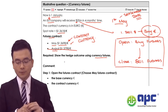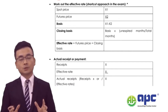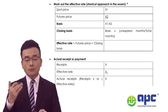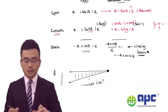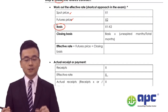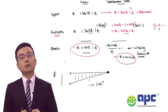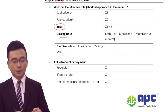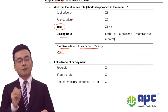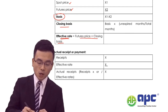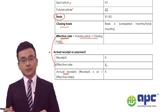This is how we use currency futures — it sounds a bit scary. Now I would like to introduce another approach, which is the current exam approach, where we can directly work this out. It's very similar to what we've seen, but we use an effective exchange rate. You take the receipt in foreign currency and divide by the effective exchange rate to get the actual receipt.